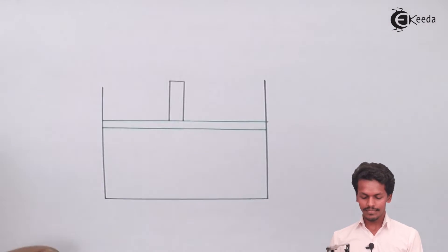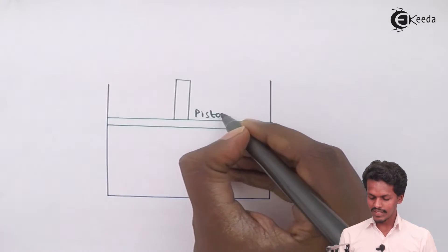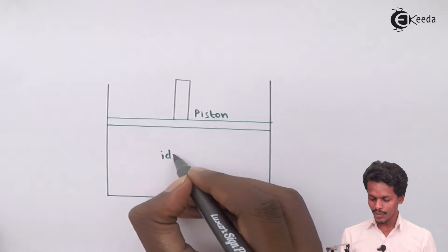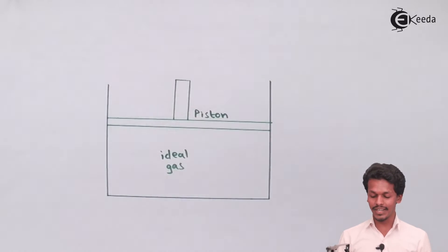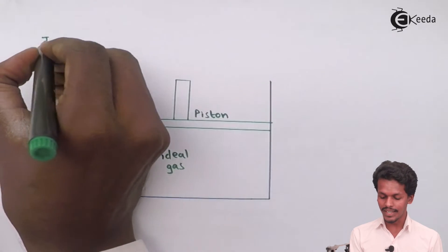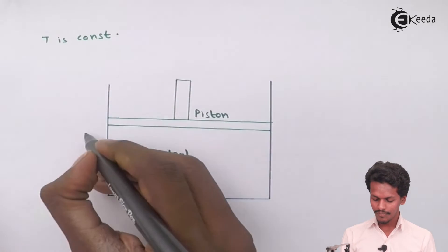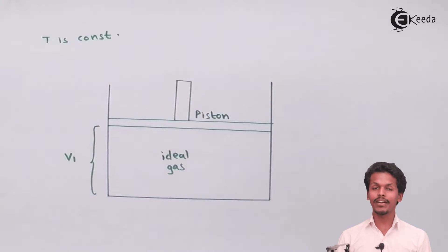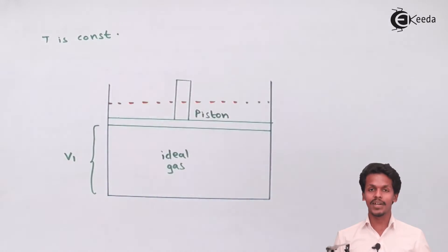Here is the diagram: this is the cylinder, and this is the piston. Inside the cylinder, the ideal gas is present. The initial volume in this isothermal condition — that is, when temperature T is kept constant — is V1. During expansion, the volume increases from V1 to a final volume V2.